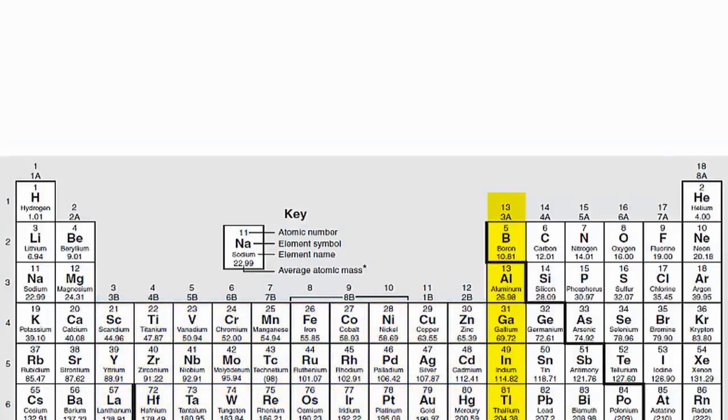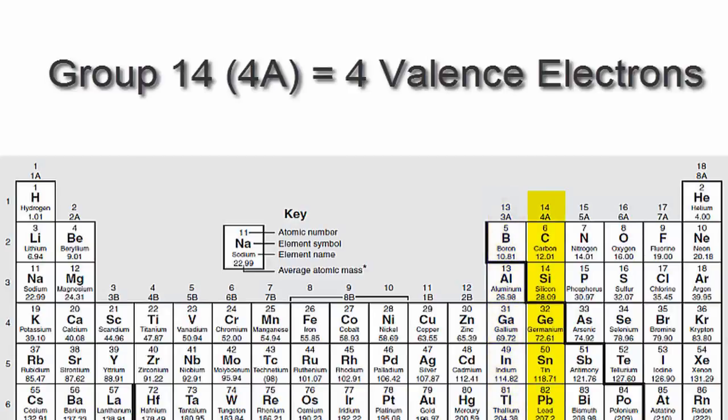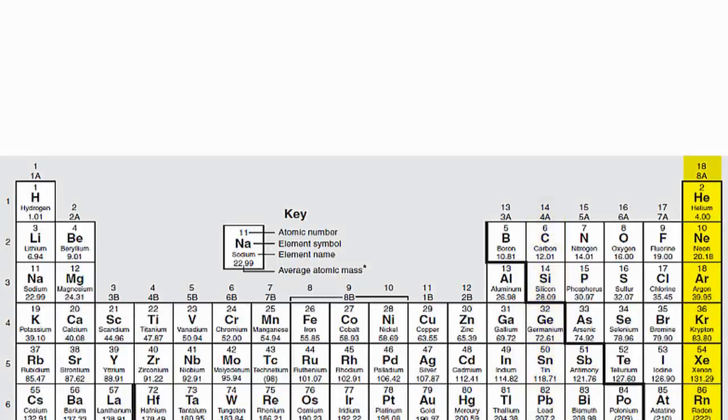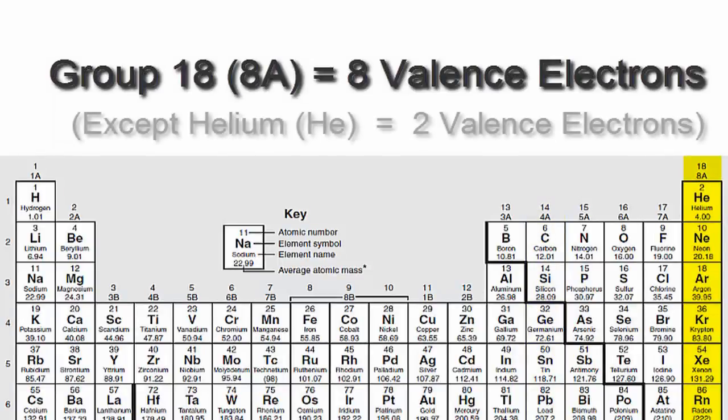We'll go to 13 or 3A, which have three valence electrons, then 14 or 4A. Each of those elements in group 14 or 4A have four valence electrons all the way up to group 18 or 8A, which have eight valence electrons.